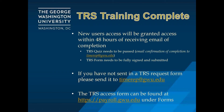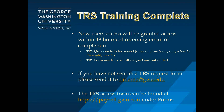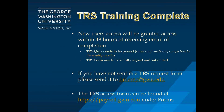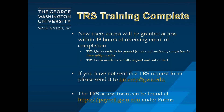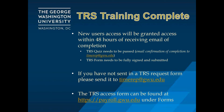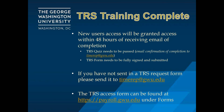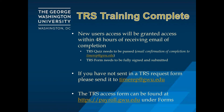TRS training is now complete. New users will be granted access within 48 hours of receiving email confirmation of completion. The TRS Quiz must be passed, and an email confirmation of completion should be sent to timerep@gwu.edu. The TRS Access Request Form needs to be fully signed and submitted to timerep@gwu.edu. The TRS Access Form can be found at payroll.gwu.edu under Forms. Thank you and have a good day.